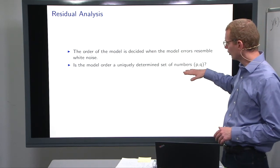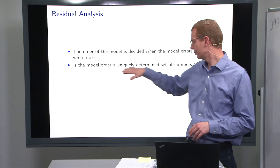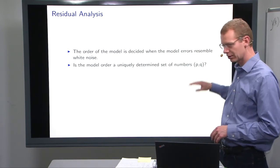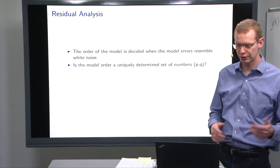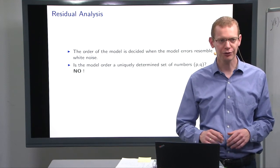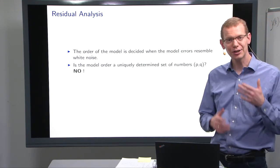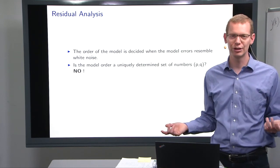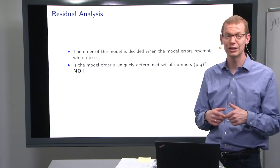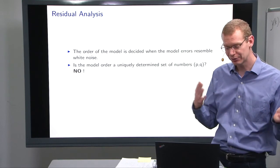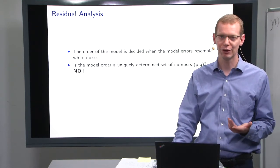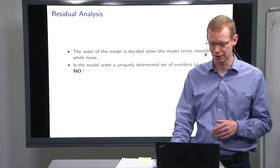You're also looking into whether the model order is uniquely determined, the number of parameters p and q. And the answer to that question is no. That also means when you're going to do this in practice, I don't expect that two different individuals will end up always with the same model. Sometimes there will be one model that is the most, and everyone will find the same, but often it's not the case.